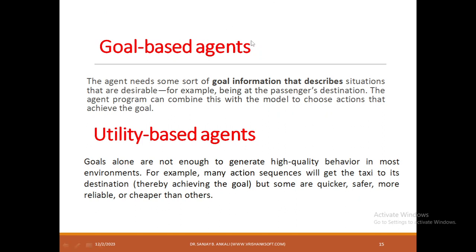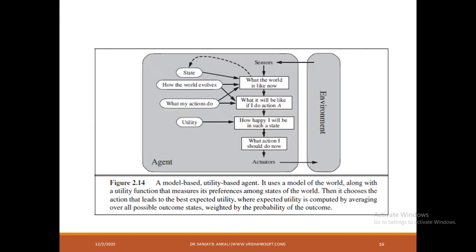Goal-based agent: these are agents that focus purely on reaching the goal. For example, a taxi will concentrate only on how to reach the destination — that is a goal-based agent. Utility-based agent: don't only focus on the goal. You have to reach the destination in quick time, safely, with less fuel consumption, more profit, and less time taken. That is a utility-based agent.